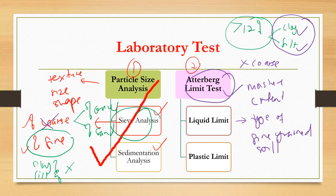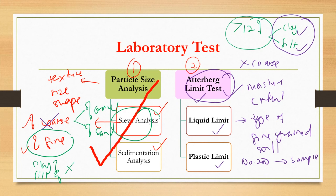From the sieve analysis test, whatever particle passing sieve number 200 would be your sample for the Atterberg limit test. For the Atterberg limit test, you have two tests: liquid limit and also plastic limit. You need to carry out both in order to further identify the types of fine-grained soil — either it is dominated by clay or silt.